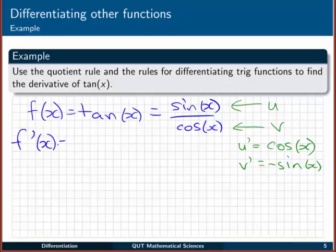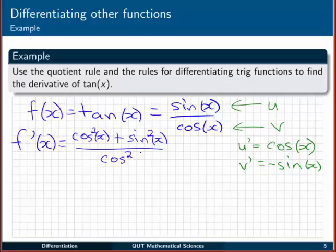So we're going to have f dashed of x is v by u dash. So that's cos of x by u dash, which is another cos of x. I'm going to make that cos squared just to save some space. Then minus u, which is sin x, multiplied by v dashed, which is minus sin x. So that minus will turn that into a plus. And the sin x, we can call that sin squared. All divided by v squared, so that's cos squared of x.